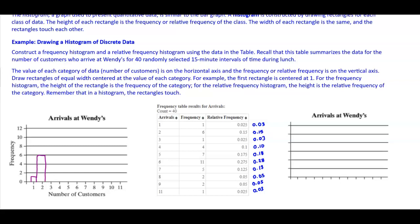For 3, the frequency is 1, so we go back to the same height. For 4, we go all the way up to 4. For 5, the frequency is 7, so we go all the way up to 7. For 6, the frequency is 11, so we go all the way up to 11. For 7, the frequency is 5, so we go all the way up to 5.